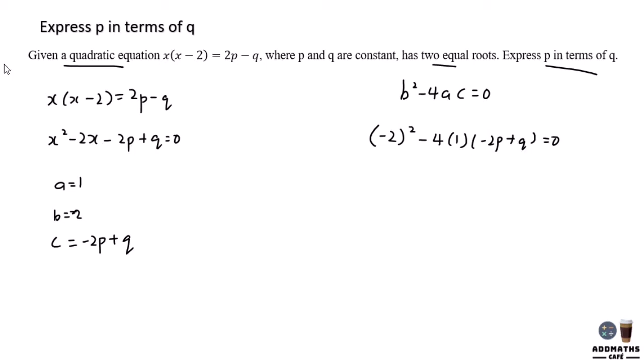So multiplying everything, negative 2 squared, you will get 4. Negative 4 times negative 2p, you will get positive 8p. And negative 4 times q, you will get negative 4q equal to zero. So p in terms of q.